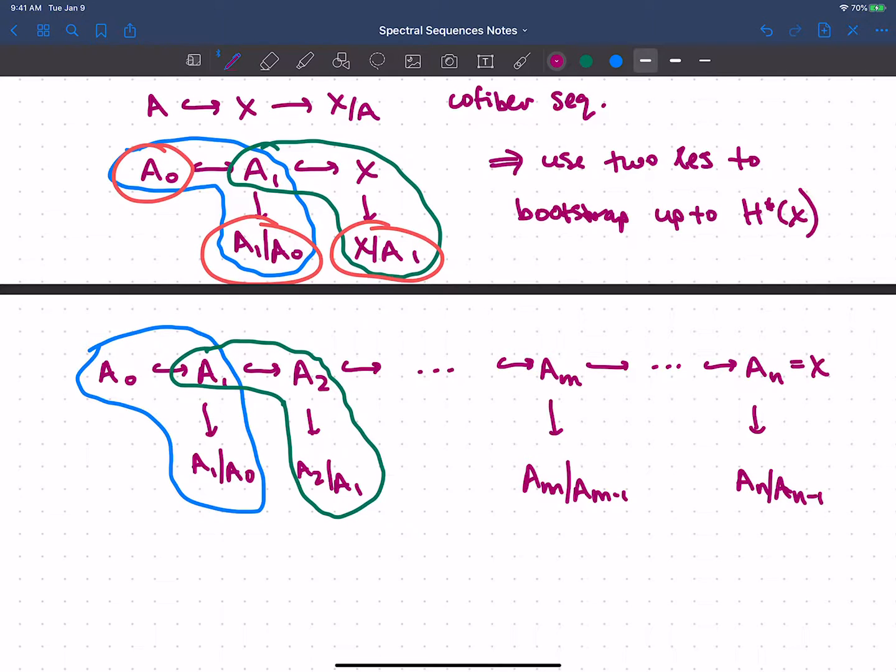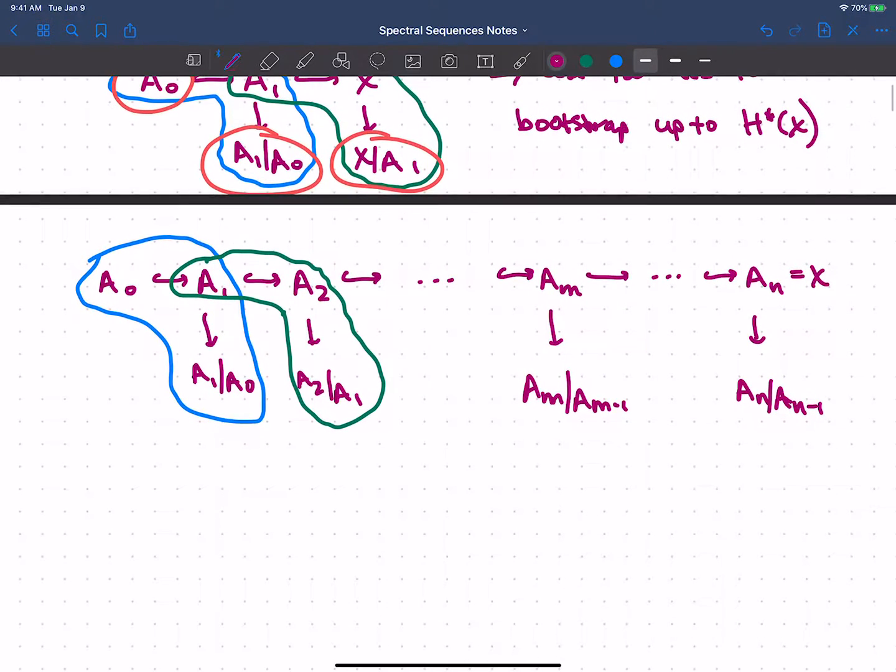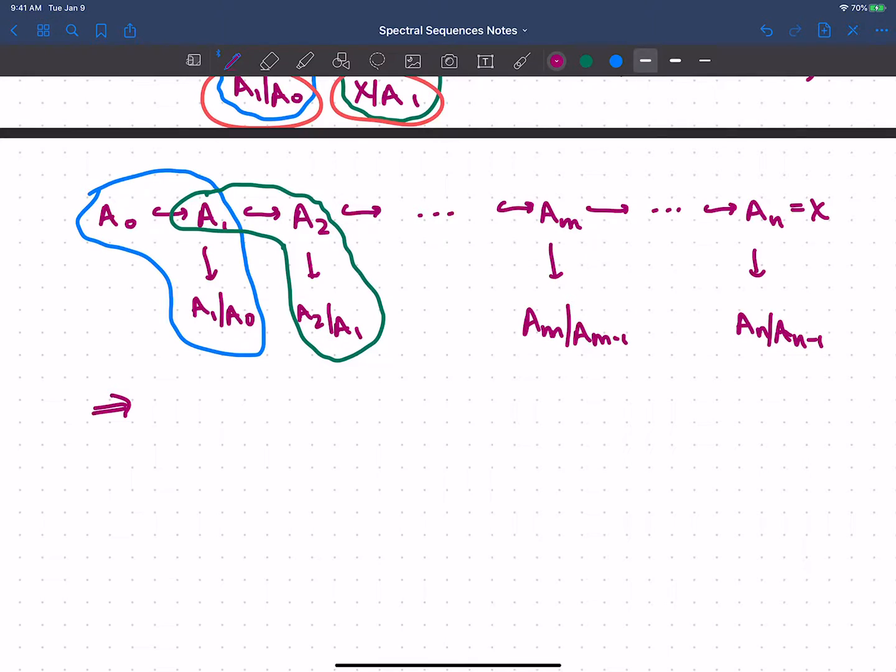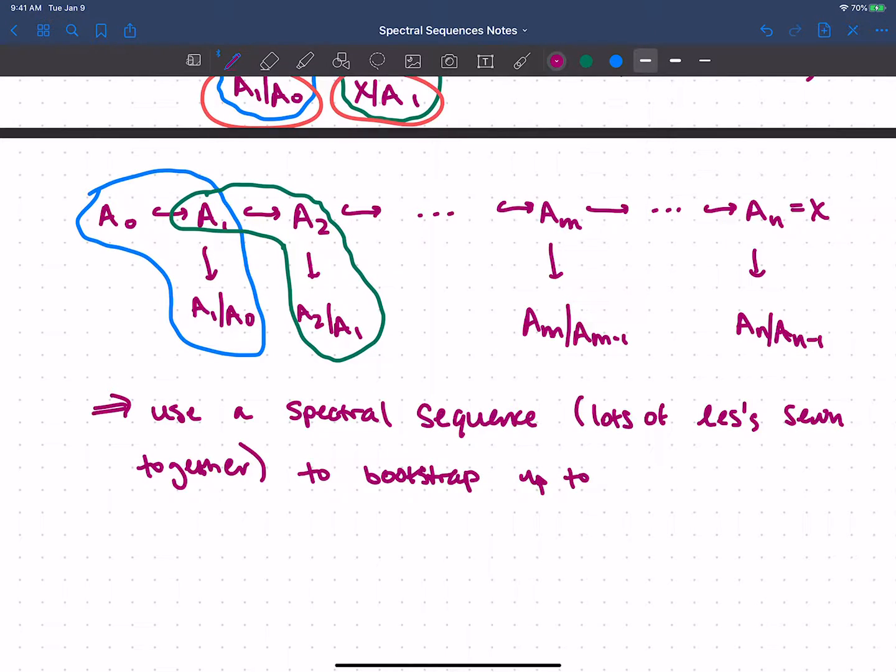And the point here is that I'll have all of these cofiber sequences together. They'll give me a bunch of long exact sequences I can sew together. And so what I'm going to do is use that to cook up essentially a lot of long exact sequences. And we'll collect all that data and call it a spectral sequence. So these are really just lots of long exact sequences sewn together. And remember that in our first meeting, I said that a spectral sequence is really just a big bookkeeping device. This is what I mean. It's going to keep the books of all of these long exact sequences together and allow us to forget some of the details. And the whole point is that then we'll be able to use that to bootstrap up, hopefully, to learn about the cohomology of the space we filtered, X.